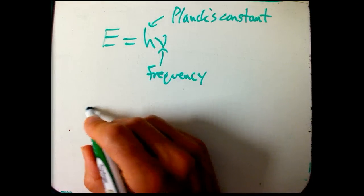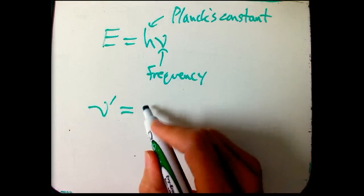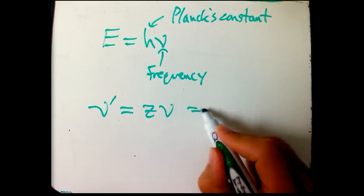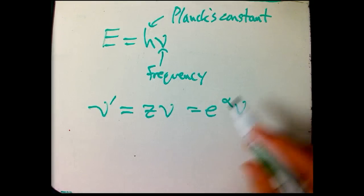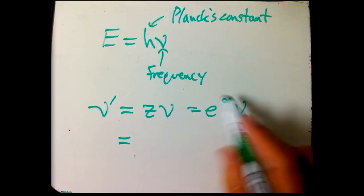Okay, and so what we get is that the nu prime is going to be Z nu, or E to the alpha nu. And what is that in terms of V?